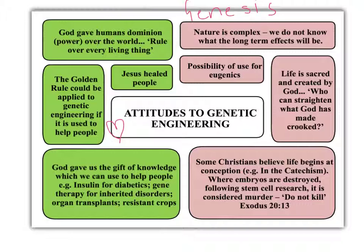On the other hand, nature is complex and we don't know what the long-term effects will be. Once you've changed the genes or the structure of humanity, it's not possible to change it back. There's also an argument that it could be used for eugenics — this is what Hitler did, but without genetic engineering, where you control a race or certain genetic traits by eliminating them completely. Imagine if Hitler had been able to get hold of genetic engineering.